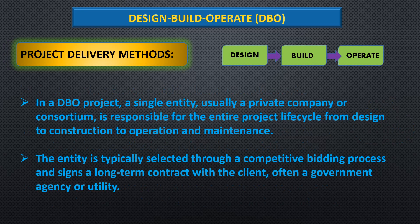In a Design-Build-Operate (DBO) project, a single entity — usually a private company or consortium — is responsible for the entire project lifecycle from design to construction to operation and maintenance. The entity is typically selected through a competitive bidding process and signs a long-term contract with the client, often a government agency or utility.